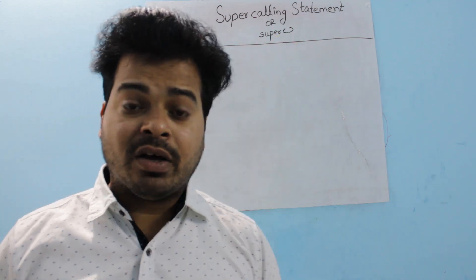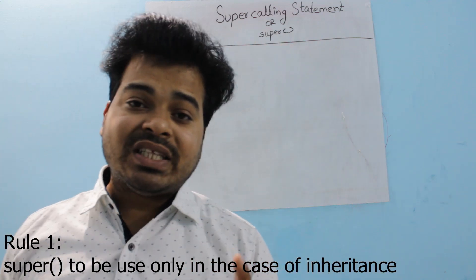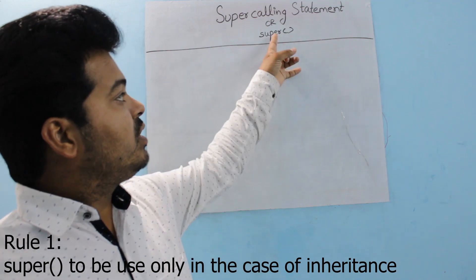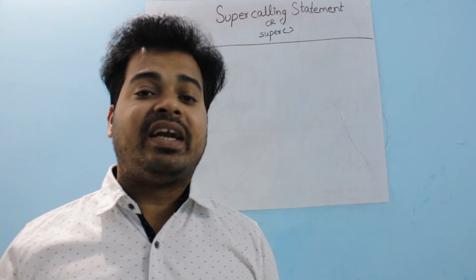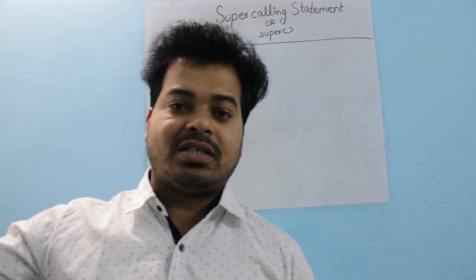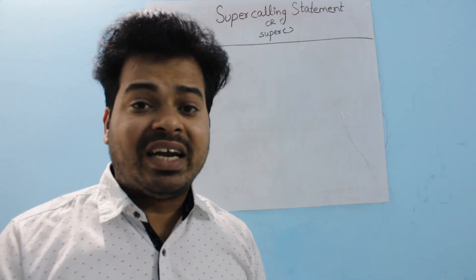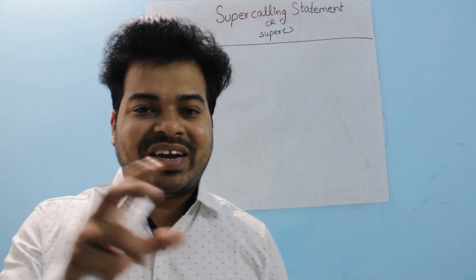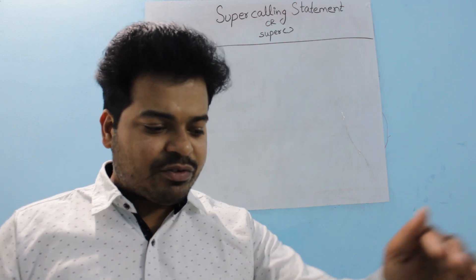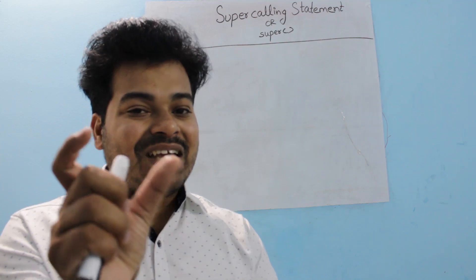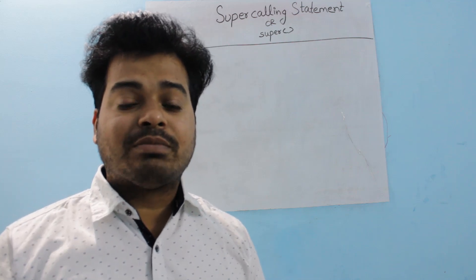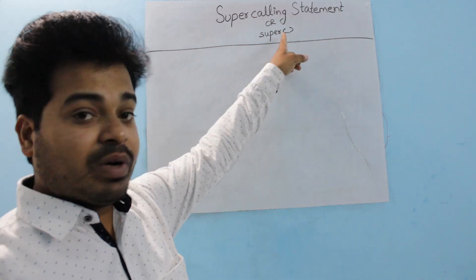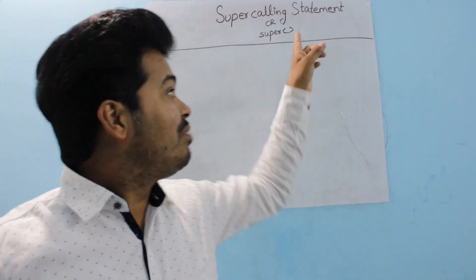Now, to understand the super calling statement, we need to know some rules before using it. Rule number one: the super calling statement is to be used only in the case of inheritance. You cannot use it anywhere else. If your program has inheritance — meaning if any class uses the 'extends' keyword — then you can use the super calling statement.